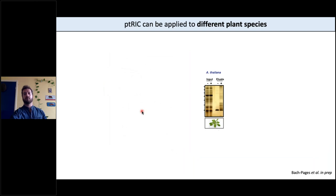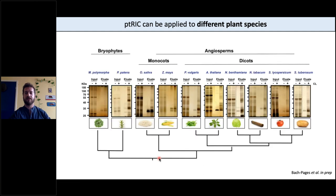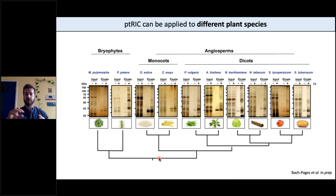Not only did we apply this to Arabidopsis thaliana, but we have applied it to a different range of plant species — from Marchantia, from Moss, all the way through to monocots and dicots. We have sent some of these species to mass spectrometry so we can reconstruct the evolutionary history of RNA binding proteins across the plant kingdom.